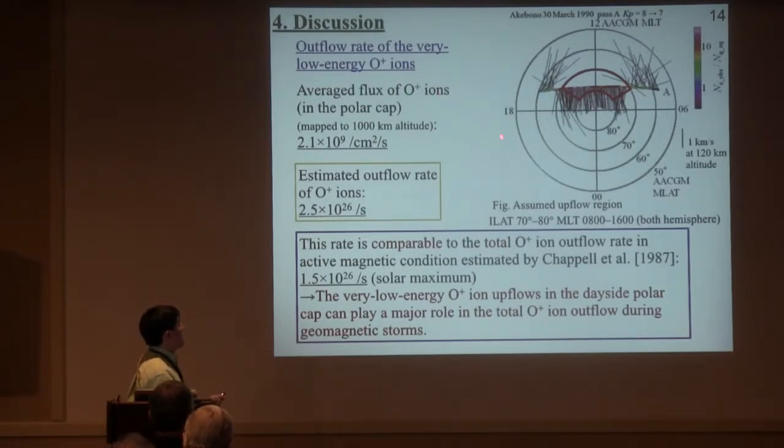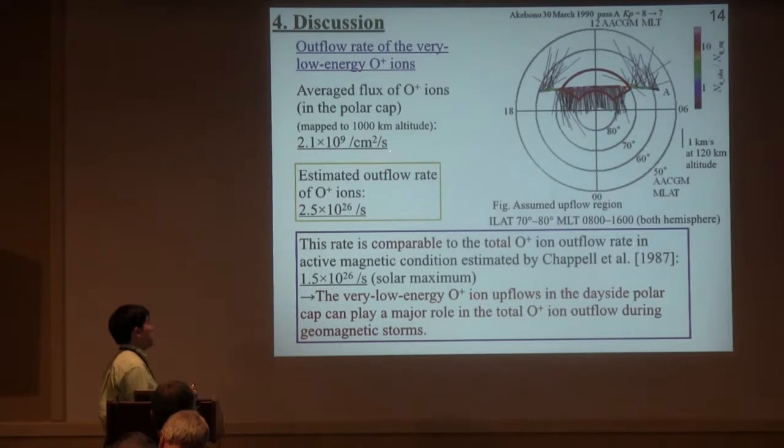Using the Akebon and Polar observation, we roughly estimated the amount of the oxygen ions through this region. Assuming this region is an outflow region and observed flux was about the order of 10 to the 9th, the estimated outflow rate becomes 10 to the 26th per second. This rate is comparable to the total oxygen ion outflow rate in active magnetic conditions estimated by Chappell et al. So the very low energy oxygen ion upflow in the dayside polar cap can play a major role in the total oxygen ion supply during a geomagnetic storm.